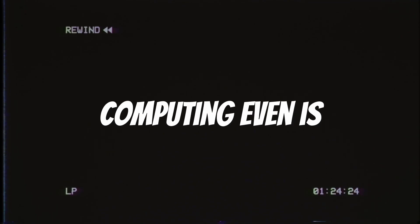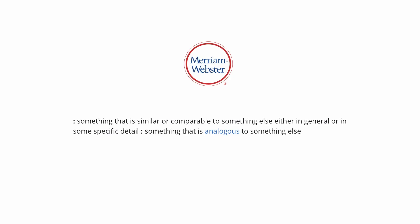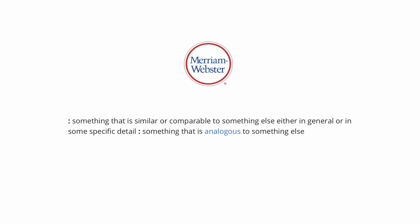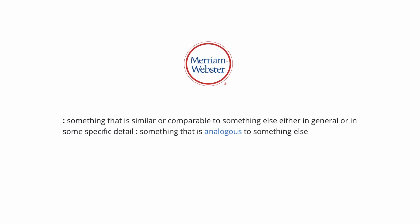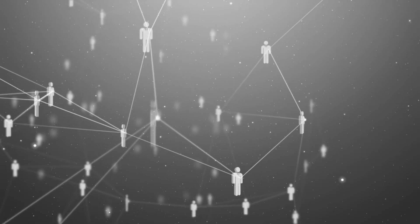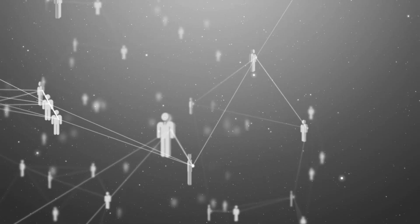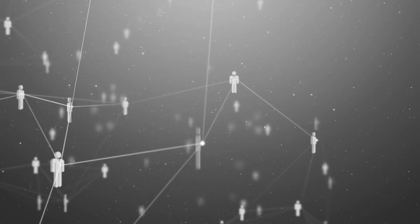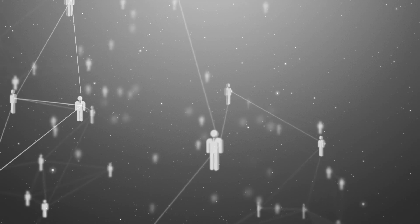Let's first learn about what analog computing even is. Before that, let's learn about what analog means. Merriam-Webster defines analog as something that is similar or comparable to something else, either in general or in some specific detail. In this sense, analog computers are machines that are physically designed to model certain relationships.